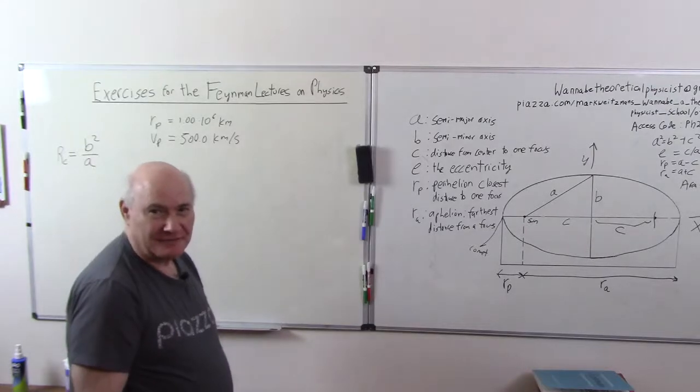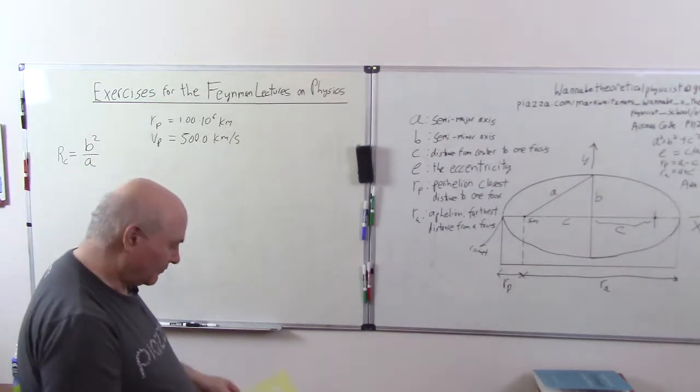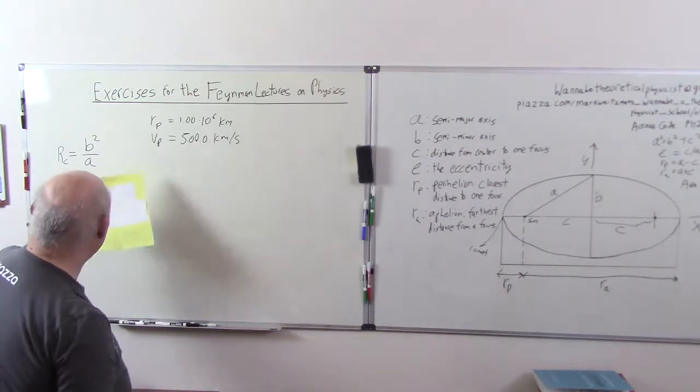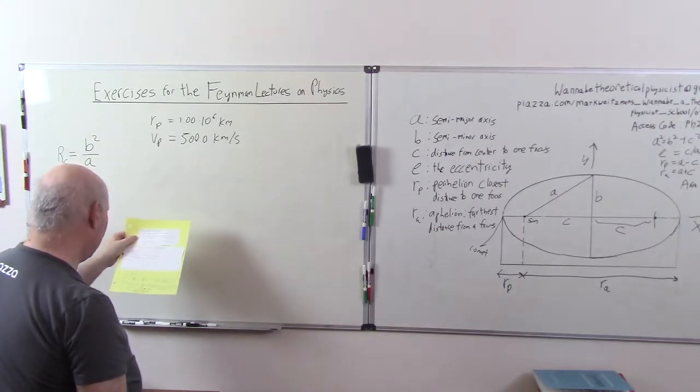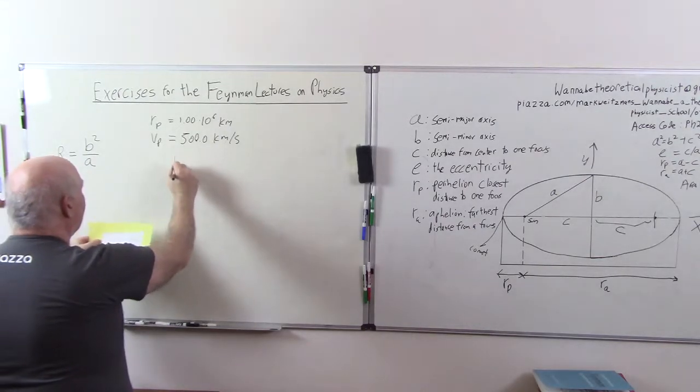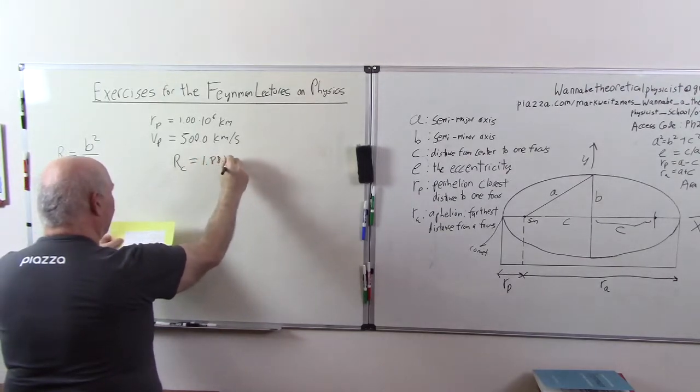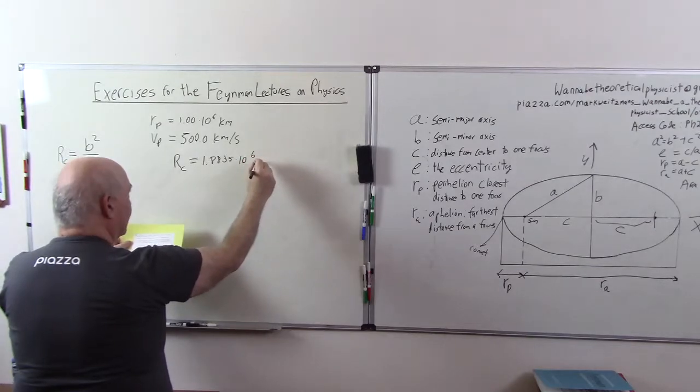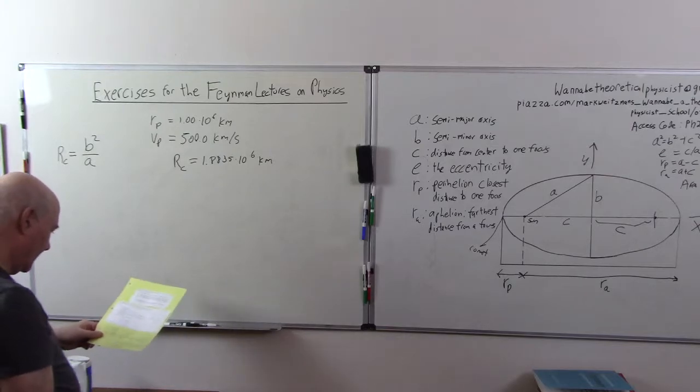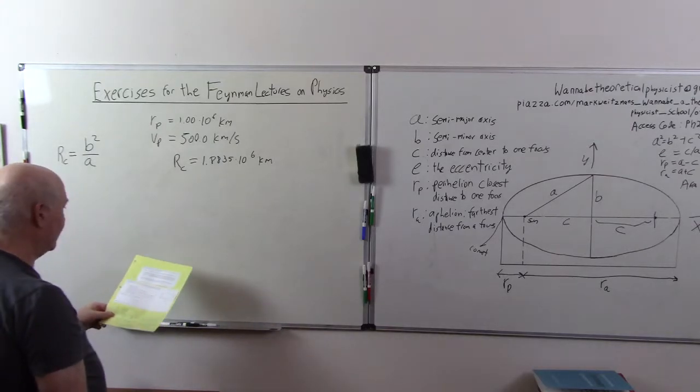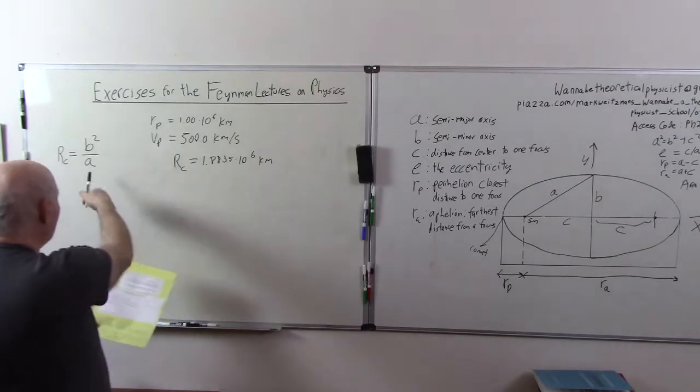I just want to now finish. Now that we've proven that the radius of curvature is B squared over A, I want to finish parts B and C. So we have this formula here, and I just want to calculate. We calculated that R in part A, we calculated the radius of curvature as 1.8835 times 10 to the 6th kilometers for this particular comet in this particular example. And now let's just find a relationship and we should be able to find what A is, semi-major axis.